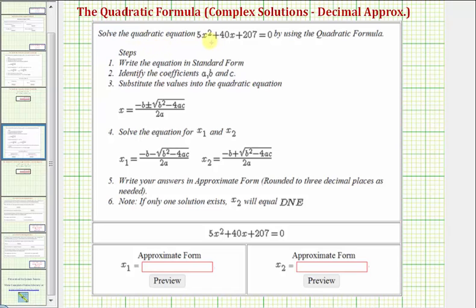We want to solve the quadratic equation 5x² + 40x + 207 = 0 using the quadratic formula. However, on this example, we're only asked to find the approximate solutions where we write the answers in approximate form rounded to three decimal places, which means you don't have to simplify the square root. We can convert to a decimal and round to three decimal places. Let's go ahead and set this up on the next slide.